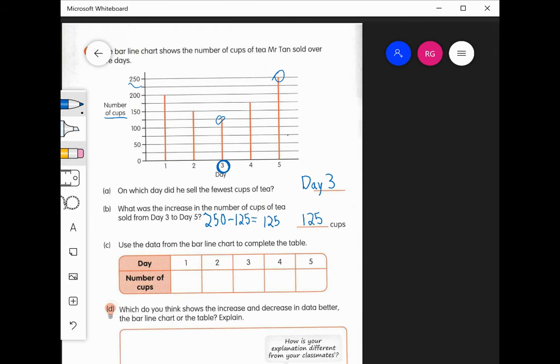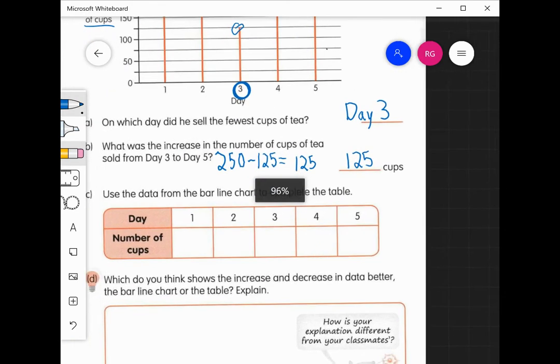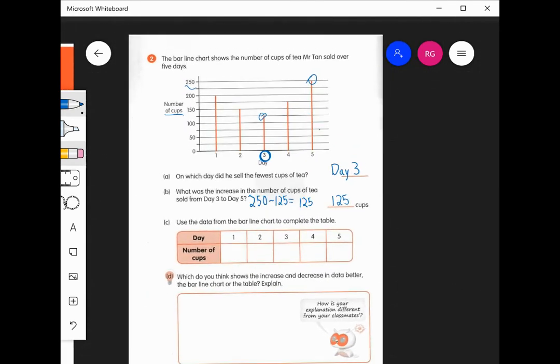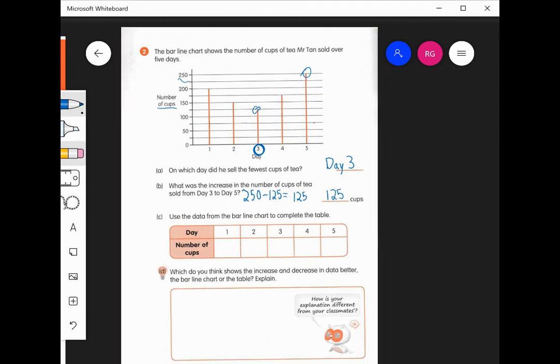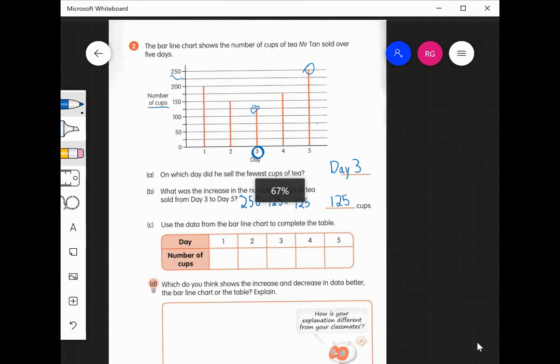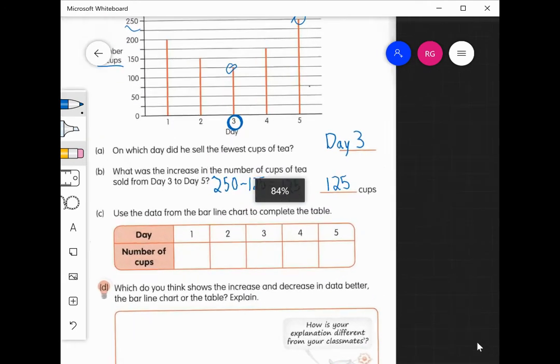All right, for C, it says use the data from the bar line chart to complete the table. So here we have the days, and they want us to fill in the number of cups that he sold on that day.